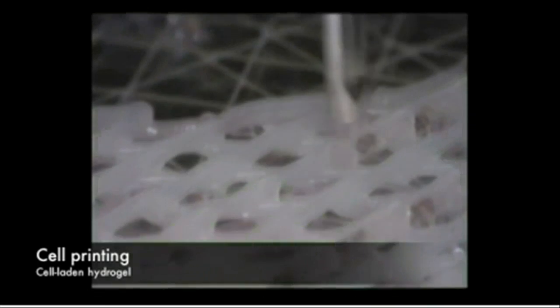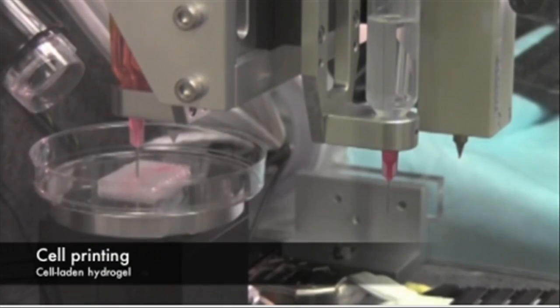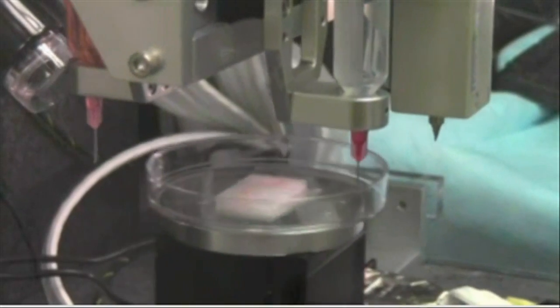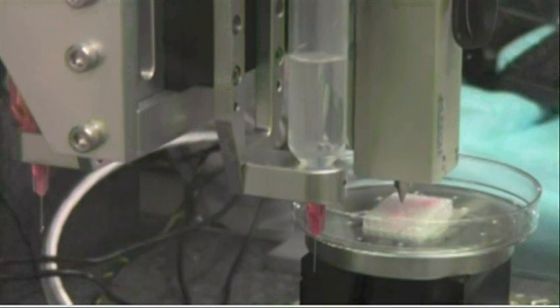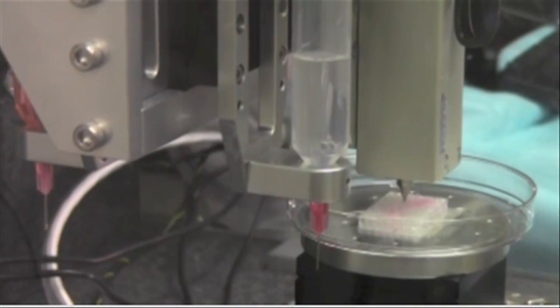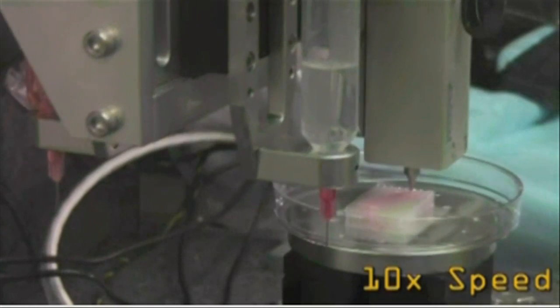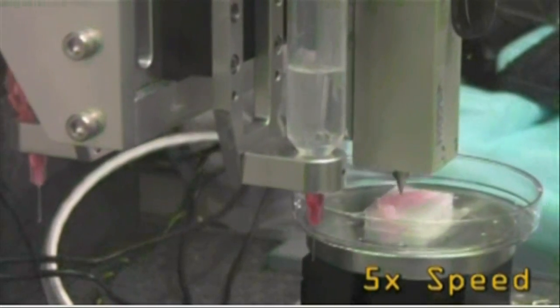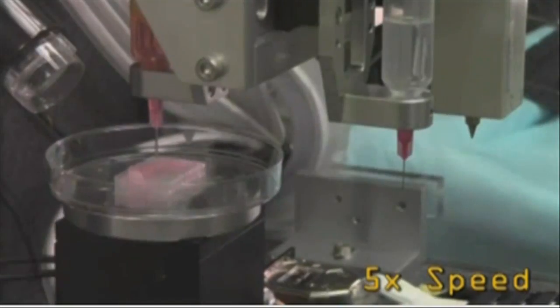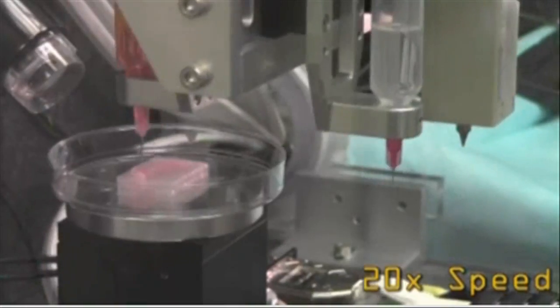To demonstrate that ITOP can generate organized soft tissue structures, printed muscle tissue was implanted into rats. After two weeks, tests confirmed that the muscle was robust enough to maintain its structural characteristics, become vascularized, and induce nerve formation.